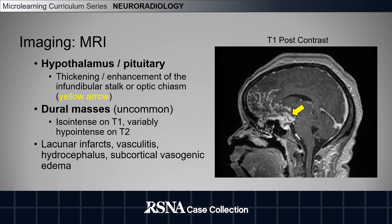Other MRI findings in patients with intracranial sarcoidosis include lacunar infarcts, vasculitis, hydrocephalus, and subcortical vasogenic edema.